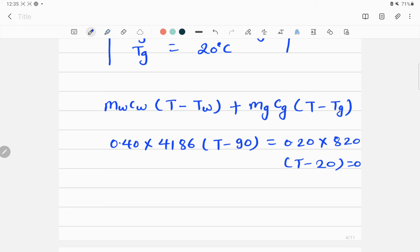So if I multiply 0.40 with 4186, this is giving me 1674.4, and then this number multiplied with 90 will give me 150696.